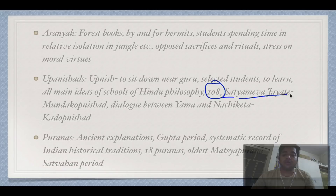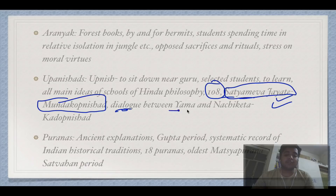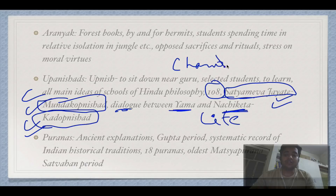There are 118 Upanishads. 'Satyamev Jayate' is taken from the Mundaka Upanishad. The dialogue between Yama and Nachiketa — about what is life, meaning of life, and death — is from the Katha Upanishad. There is also the Chandogya Upanishad. If you can remember these three names, that is more than enough.